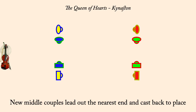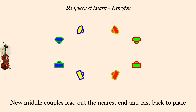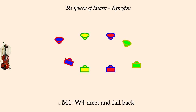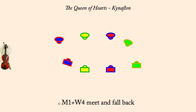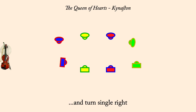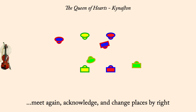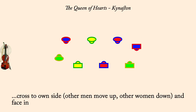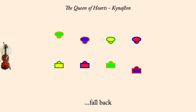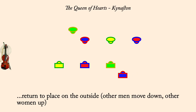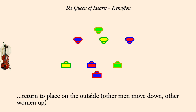Man one, woman four: meet and fall back. And turn single right. Meet again and change by right. Cross to own side, others make room. Fall back. Return to place, others make room.